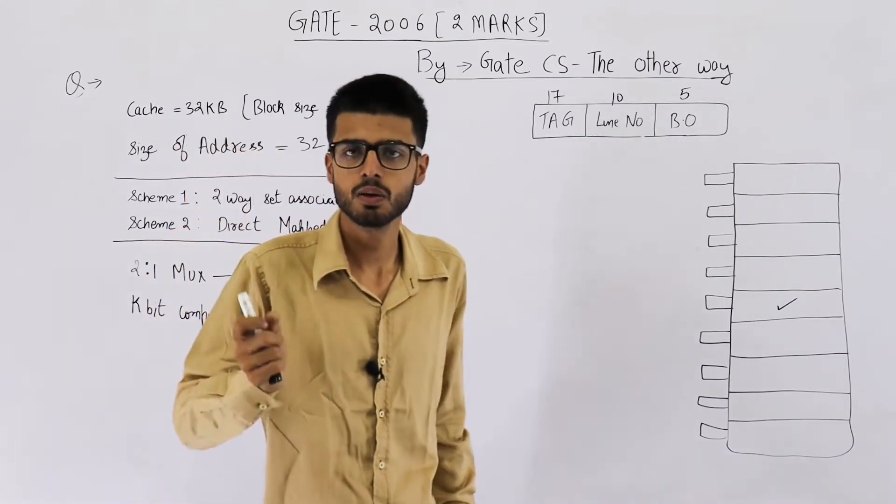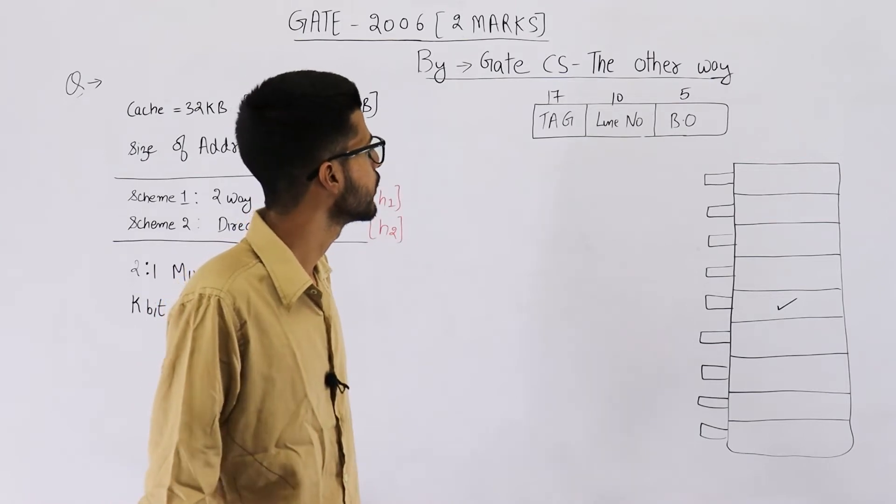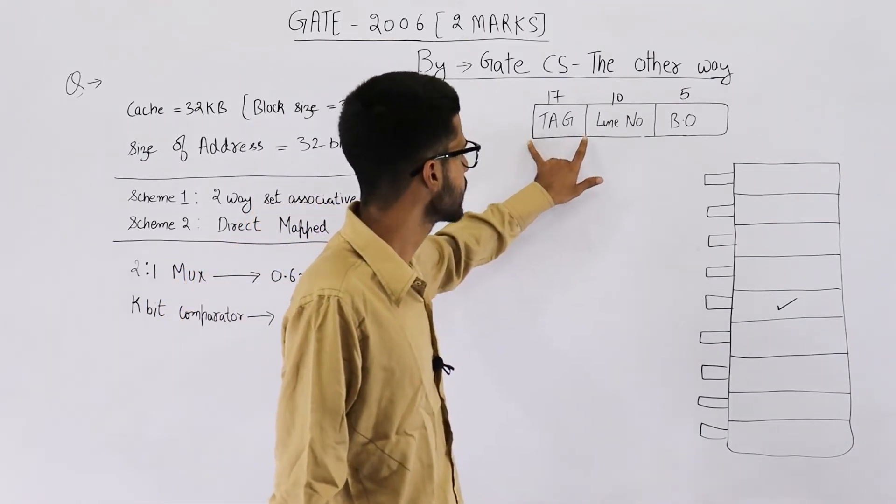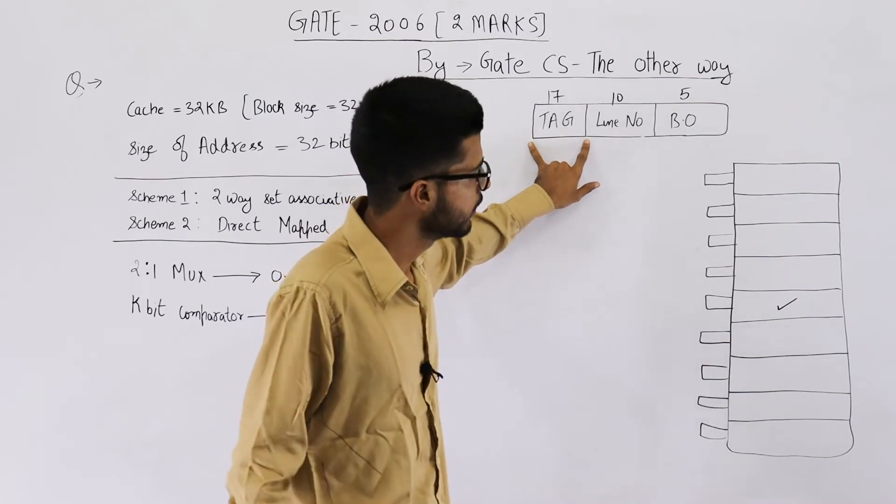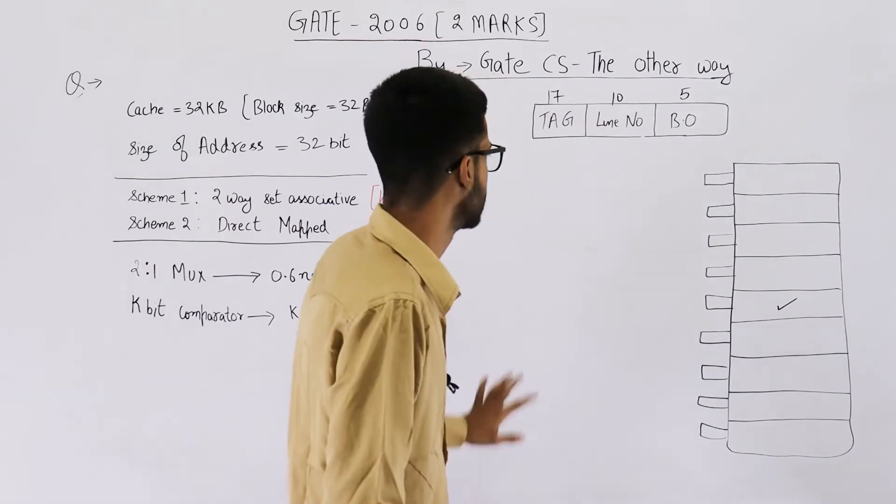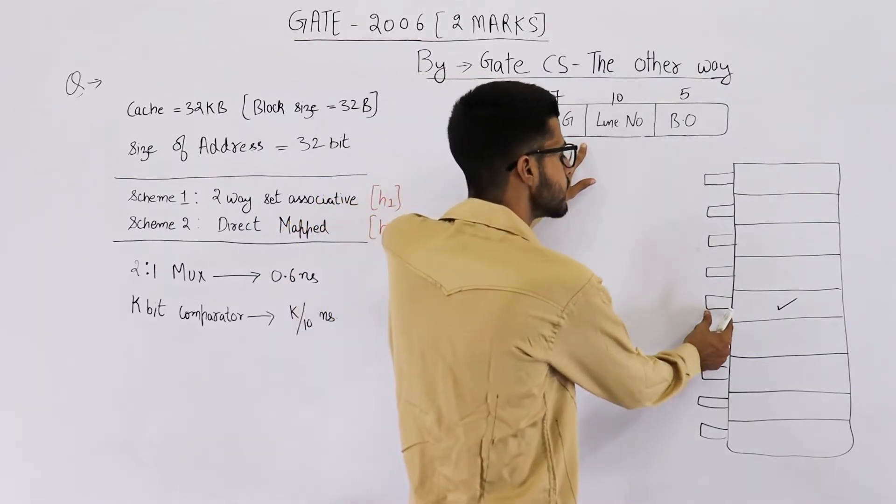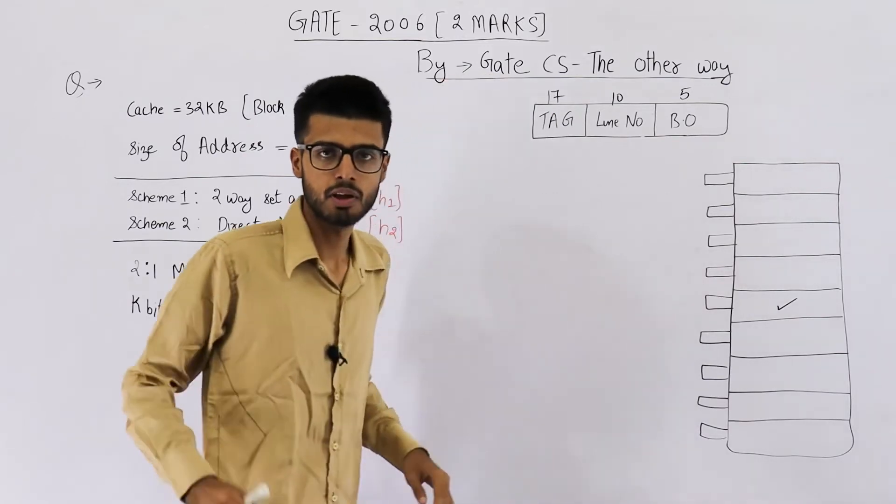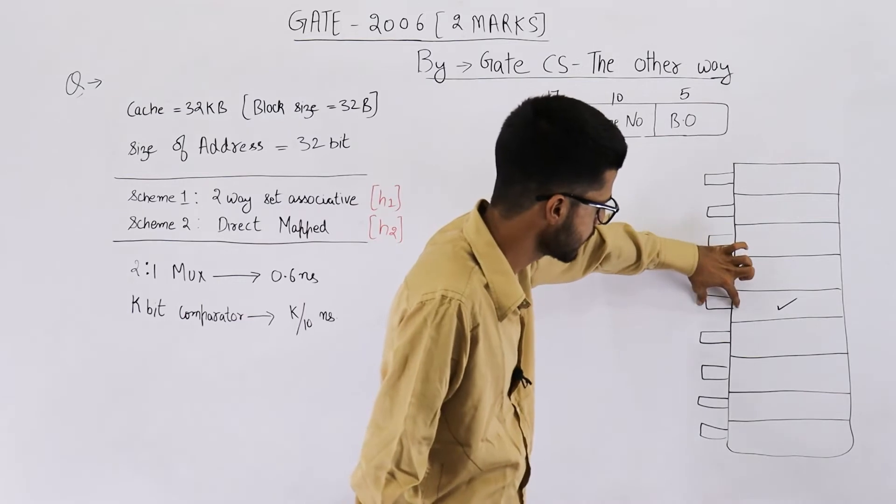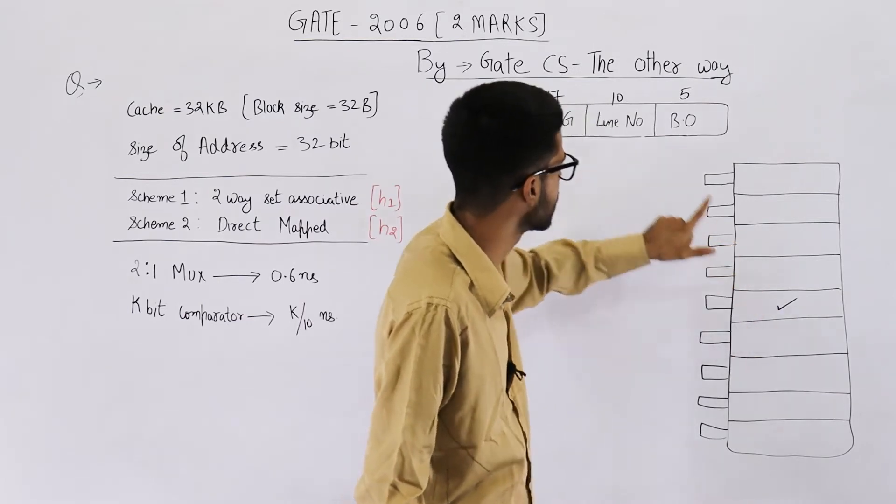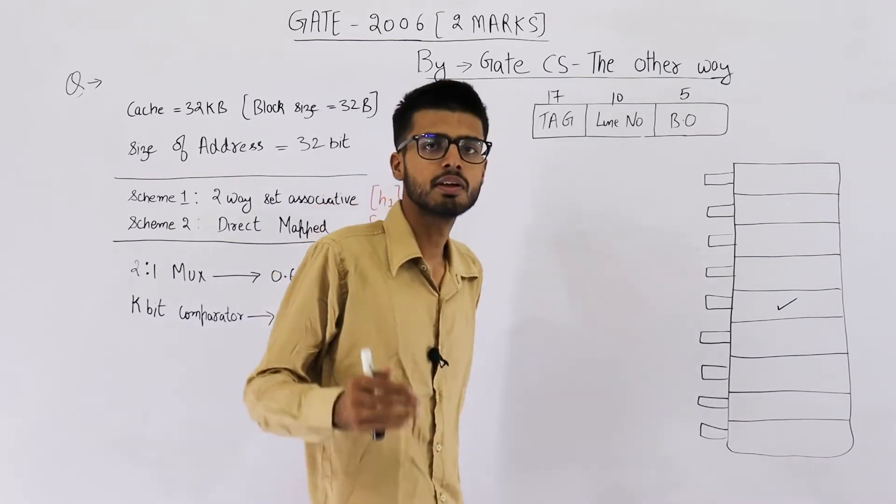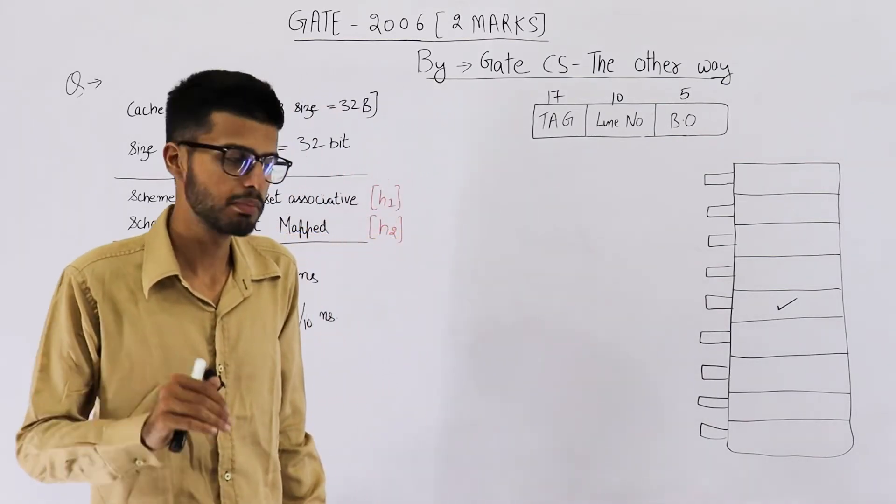Now, there could be two possibilities. Either it is a hit or it is a miss. How do we determine that if it's a hit or miss? So you take these 17 bits from the address. Compare it with the tag of that corresponding line. Take these 17 bits and these 17 bits. You compare them. If both of them are same, that means it's a hit. If this tag part corresponding to this line number, if it's different, that means these two are not same. That means it's a miss.